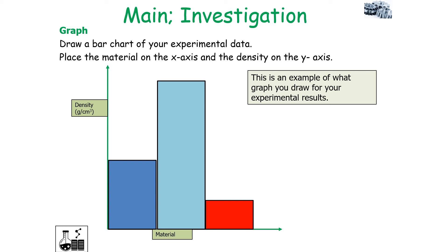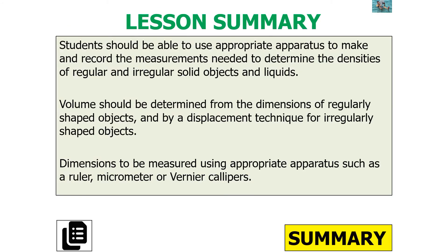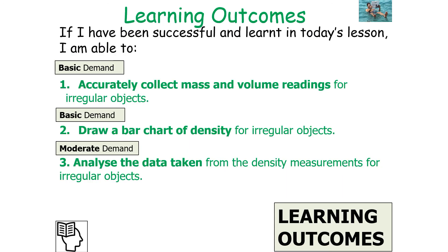In summary, you should be able to use appropriate apparatus to make and record measurements needed to determine the density of irregular solid objects. Volume should be determined by the displacement technique, and the balance is used to measure mass. If you've been successful, you should be able to accurately collect mass and volume readings for irregular shaped objects, draw a bar chart of density for irregular objects, and analyse the data to understand their densities.